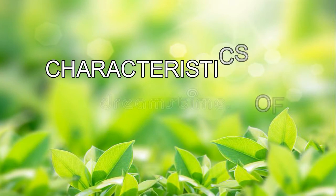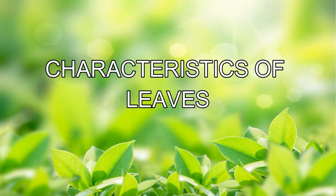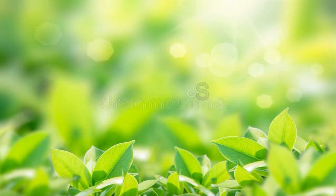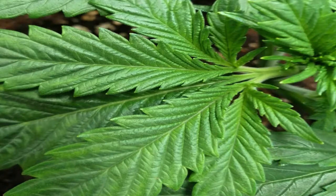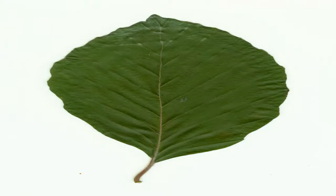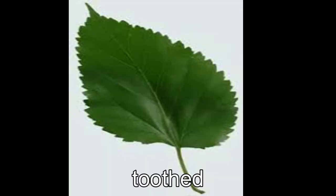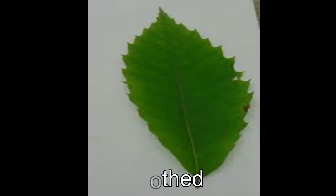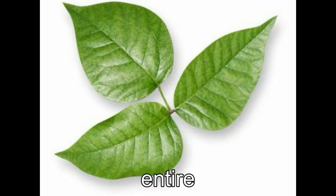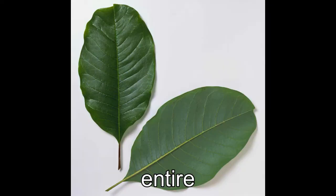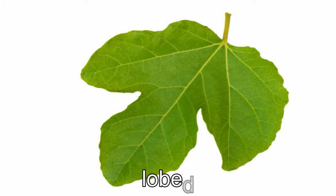Characteristics of leaves: the leaves of plants differ in many characteristics. Leaves differ in the shape of their margins or edges. Leaves with margins or edges that look like a saw are called toothed. Leaves having smooth edges are called entire. Leaves with irregular edges are called lobed.